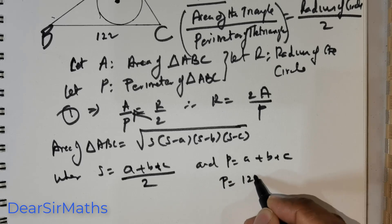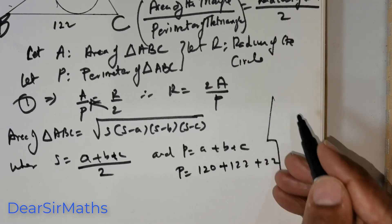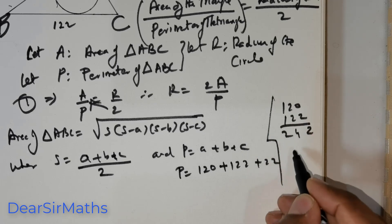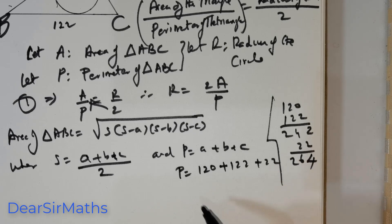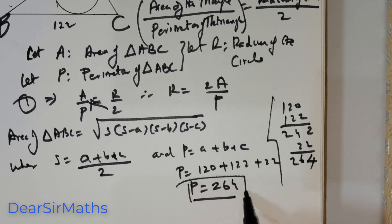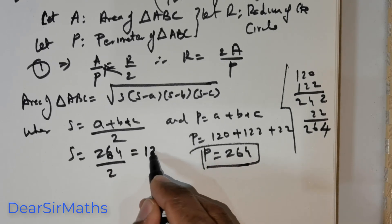So, P is equal to 120 plus 122 plus 22. So, let me add this up. 120 plus 122, 2, 4, 2. So, P is equal to 264. That is, all right. So, S is equal to 264 divided by 2. So, that's going to be 132.